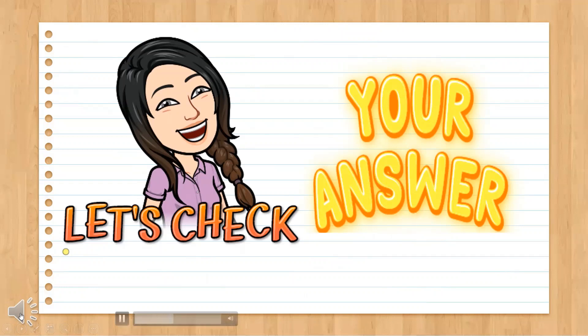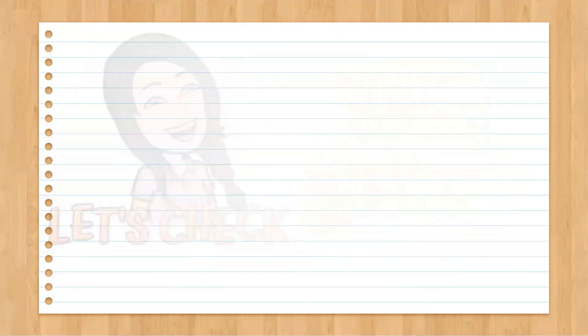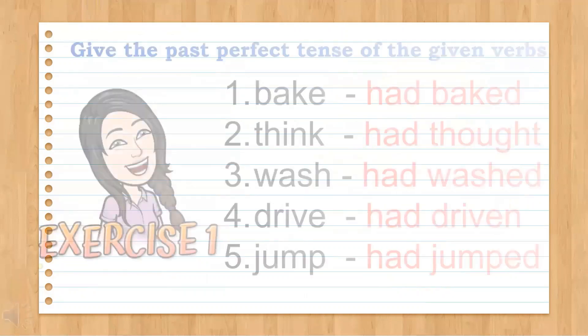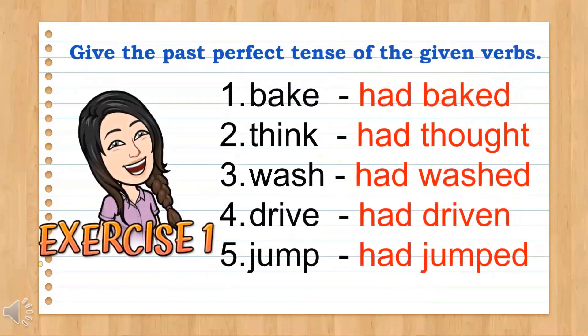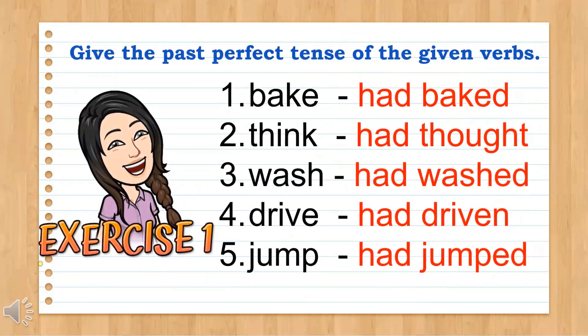Let's check your answers in Exercises 1 and 2. The correct answers in Exercise 1: number 1 — had baked, 2 — had thought, 3 — had watched, 4 — had driven, 5 — had jumped.